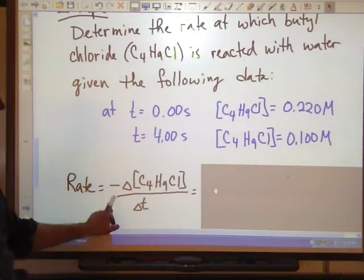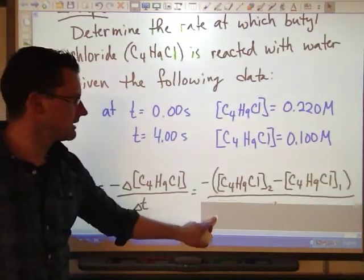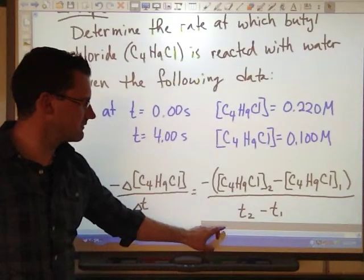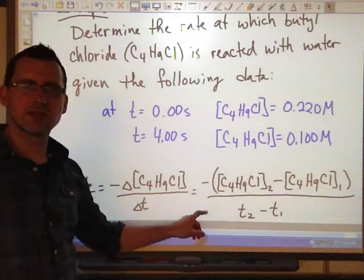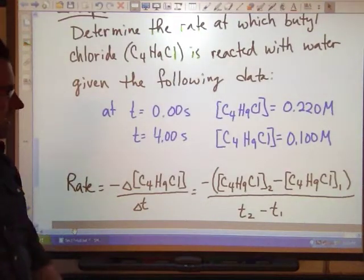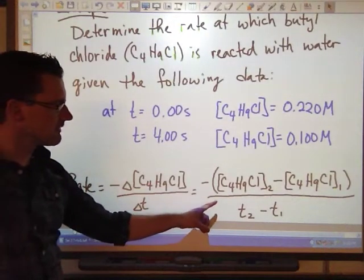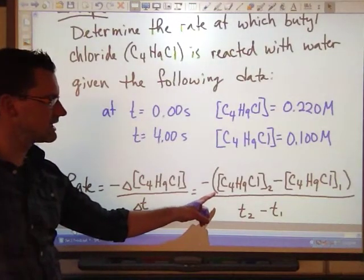Because I know it's a reactant being used up, I'll use that negative. To ensure that that negative does what it's supposed to, I simply place it outside of brackets here and label my final amount of C4H9Cl minus the initial amount of C4H9Cl.